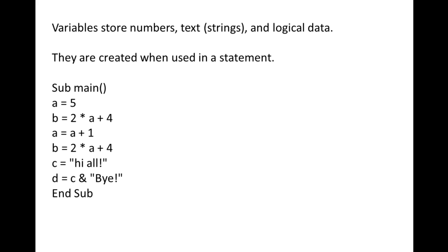Our macro is named main and contains statements that assign values to variables. Our first statement is a equals 5. The variable a is created and the value 5 is assigned to it. If we use the variable a later in the code, the value 5 will be put in its place.